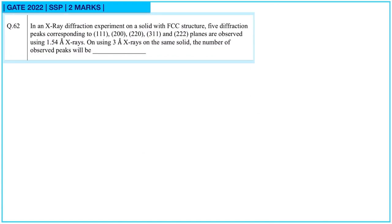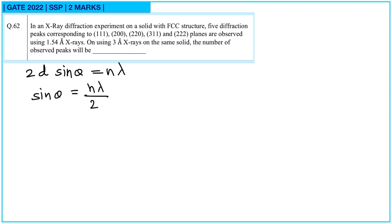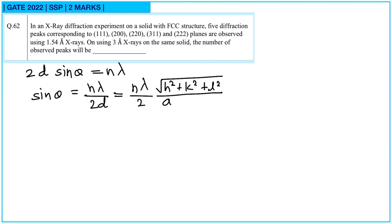Question number 62: in an X-ray diffraction experiment on a solid with FCC structure, 5 diffraction peaks corresponding to (111), (200), (220), (311), and (222) planes are observed using 1.54 Å X-rays. On using 3 Å X-rays on the same solid, how many peaks will be observed? We use Bragg's law: 2d·sin(theta) = n·lambda, so sin(theta) = n·lambda / (2d), where d = a / sqrt(h^2 + k^2 + l^2) for a cubic lattice. The maximum value of sin(theta) is 1.